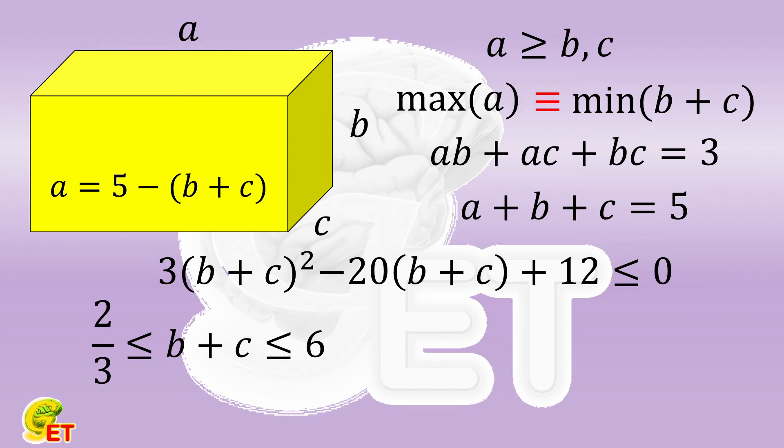Using A equals 5 minus B plus C again, we obtain the range of A is between minus 1 and 13 thirds. So the answer is that the maximum value of A is 13 thirds.